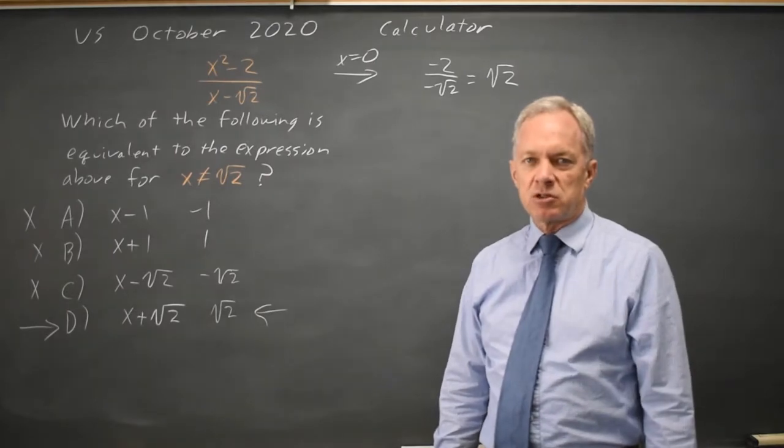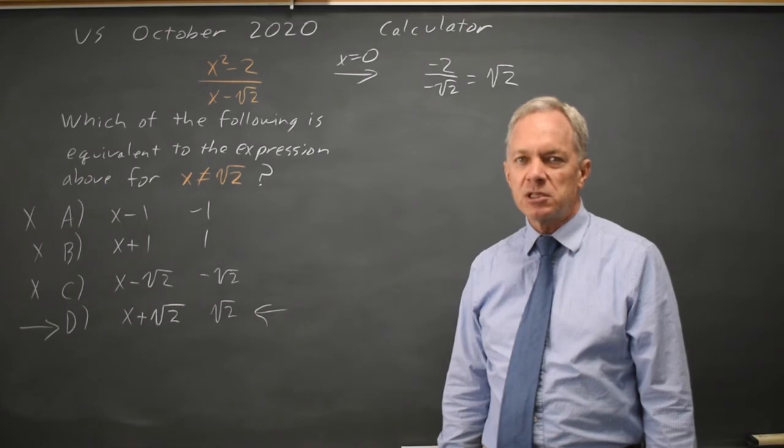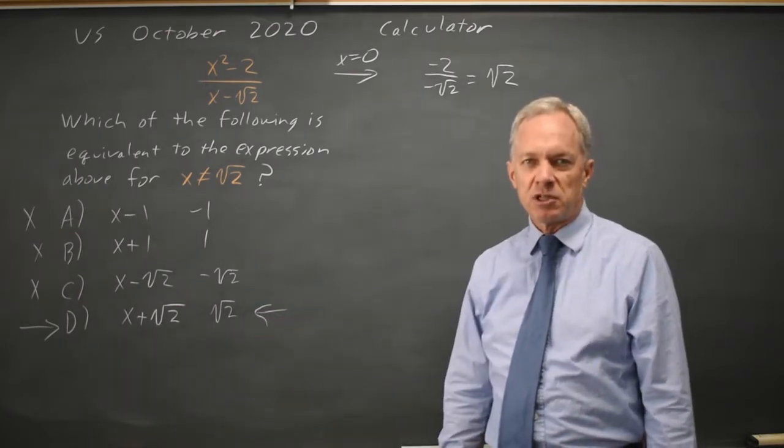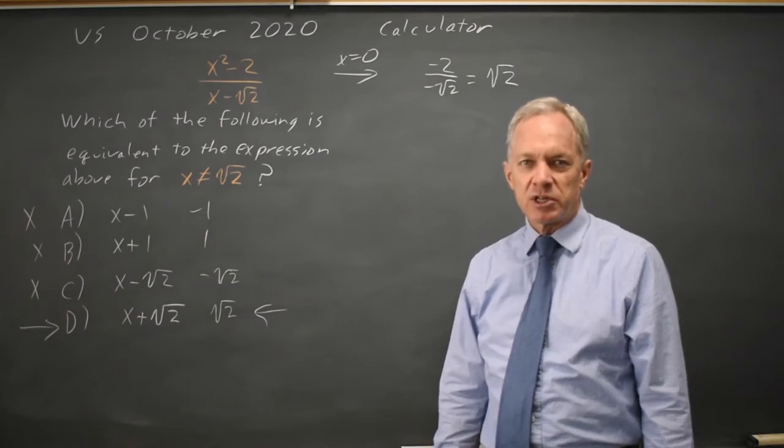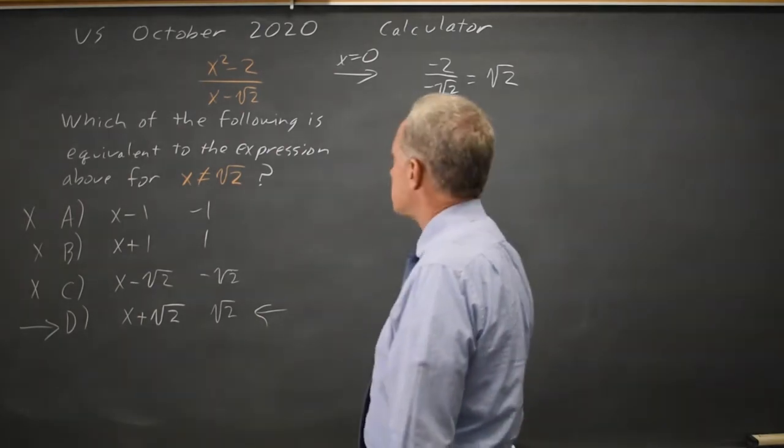In most cases, trying x equals 0, x equals 1, or both will tell you which expression is equivalent to a rational expression with College Board questions. And your goal is to find the correct answer. You know it's one of the four choices, so plugging in 0 or 1 or both is a good strategy.